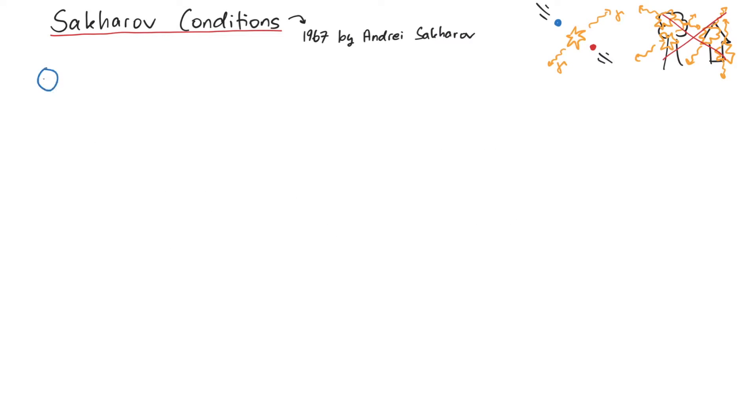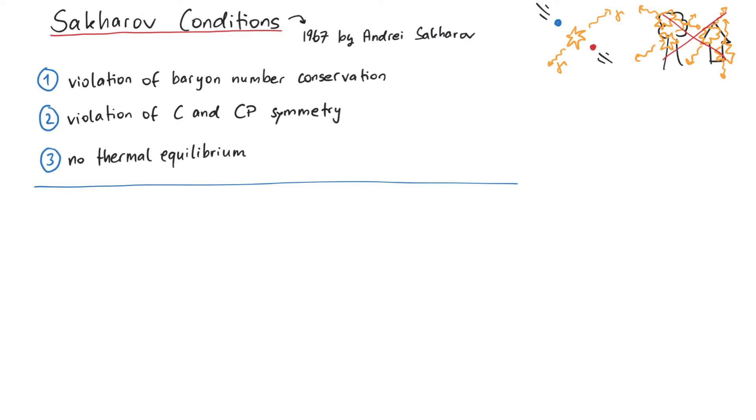These conditions are violation of baryon number conservation, violation of C and CP symmetry, and no thermal equilibrium. Let's look at each of these conditions in detail to see how they could lead to a matter-antimatter asymmetry.